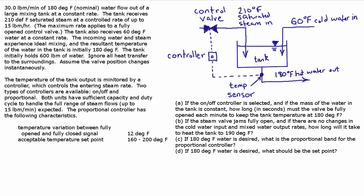We have 30 pounds per minute of 180-degree water flowing out of a large mixing tank at a constant rate. The tank receives 210 degrees Fahrenheit saturated steam at a controlled rate of up to 15 pounds per minute. The maximum rate applies to a full-open control valve.